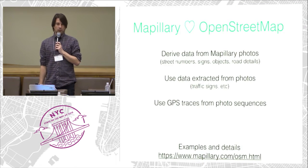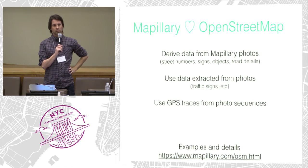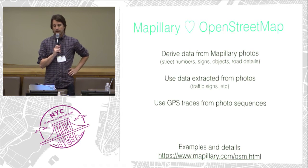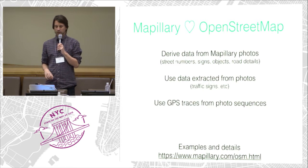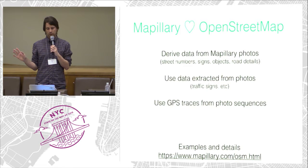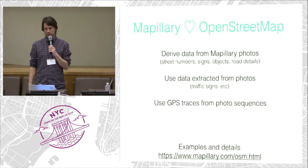Our history with OpenStreetMap is fairly short since we're a young company. We launched this service in February last year. When we were getting ready to launch, we talked a lot with local OpenStreetMap communities. We came up with these ground rules very early on: let everyone derive any data they want from our photos, use our photos any way they like for improving OpenStreetMap — including all the data we extract with computer vision, GPS traces, whatever you can find on our site. There's a specific page with details and examples for OSM.